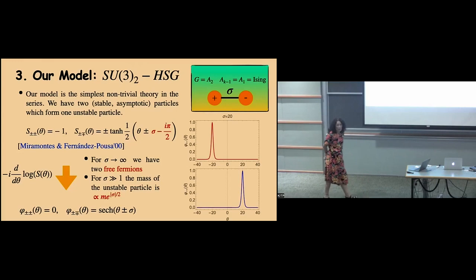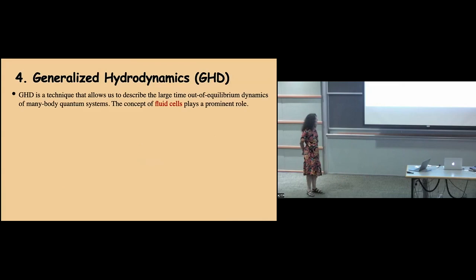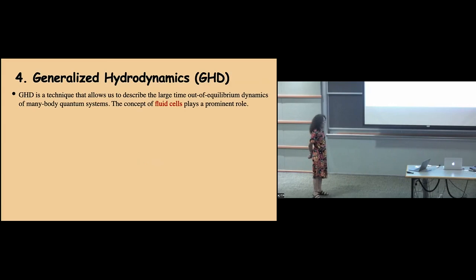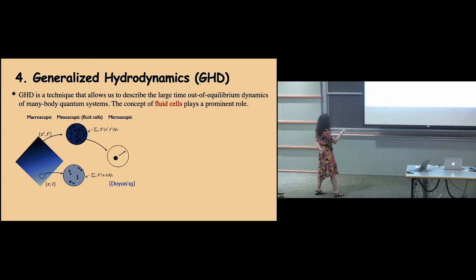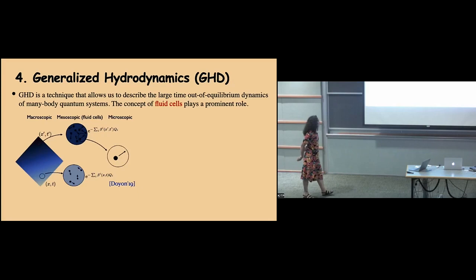This is the input — the information that we put into the TBA and GHD equations. Now let me say something about GHD. It's a hydrodynamic description of many-body quantum systems that has become very widely used since 2016 when it was proposed. It's based on the usual hydrodynamic principle of fluid cells. The idea is that at the mesoscopic scale, the system can be thought of as little fluid cells which contain enough particles that each cell will equilibrate to some distribution.